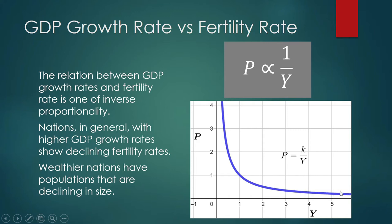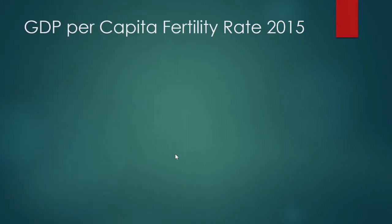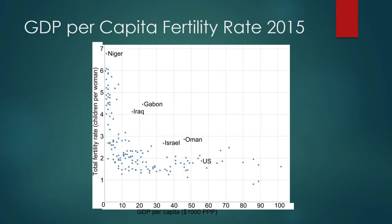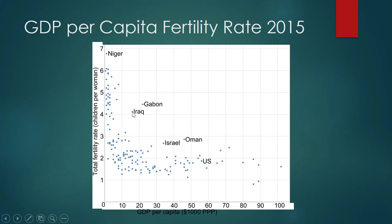That is also revealed by the graph — this is a decreasing curve. As Y increases, the value of P decreases. This is a scatterplot of nations and their corresponding GDP per capita as measured in $1,000 and the fertility rate, using data from 2015. Iraq, for example, has a GDP per capita of something like $16,000, but the fertility rate per woman in Iraq is somewhere between 4 and 5, close to 4.1.